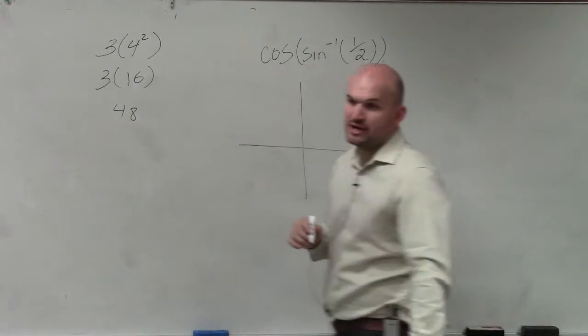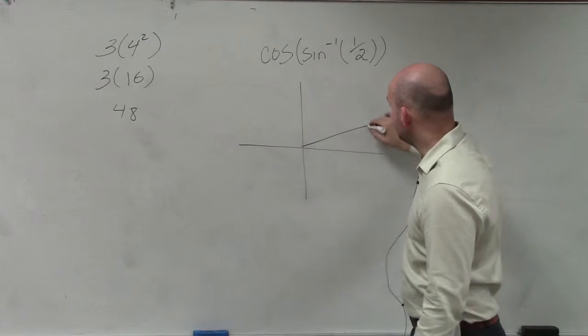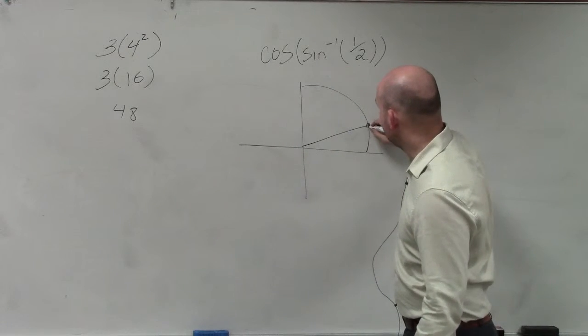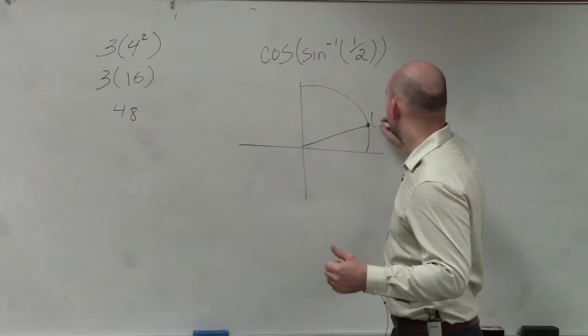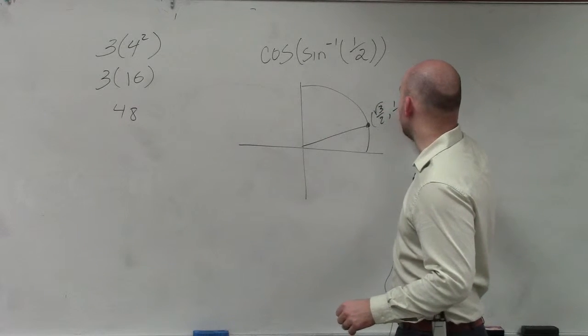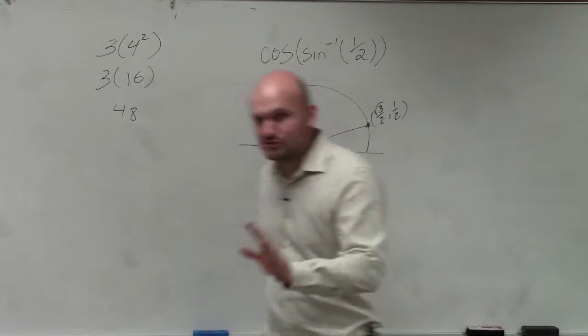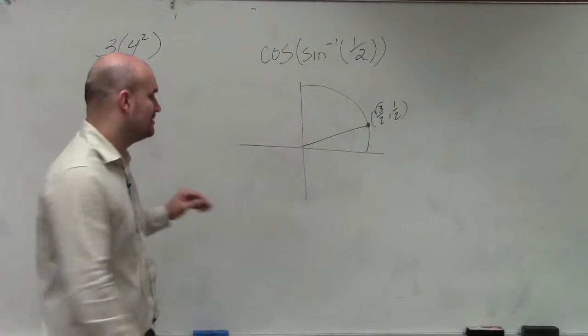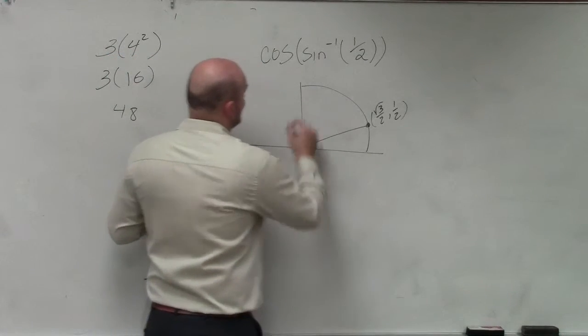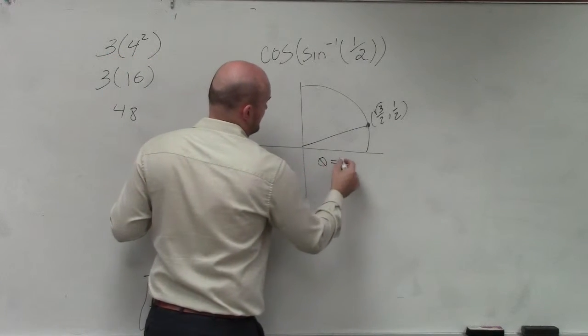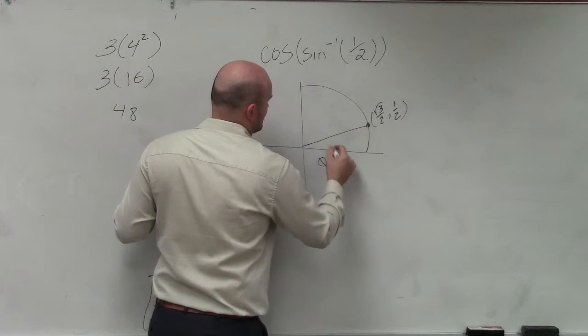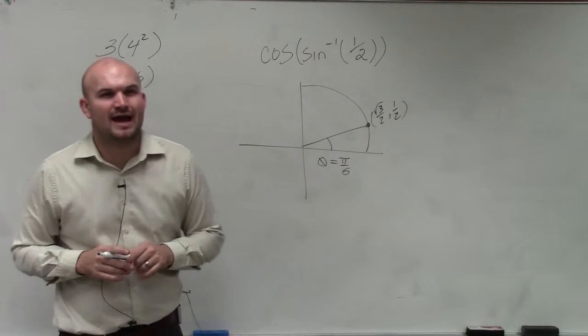So the first one I notice is 30 degrees, right? Because the triangle that I wrote there, the y-coordinate is square root of 3 over 2 comma 1 half. So I am going to use, though, radians. So therefore I could say theta is pi over 6. Is that the only time sine, though, is equal to 1 half?